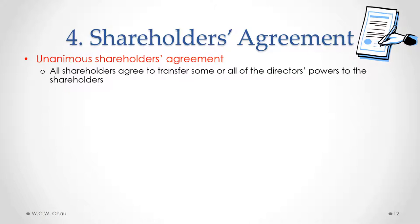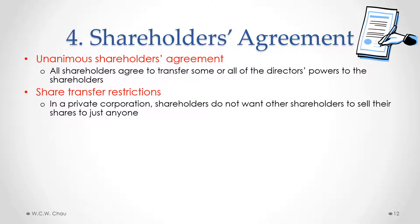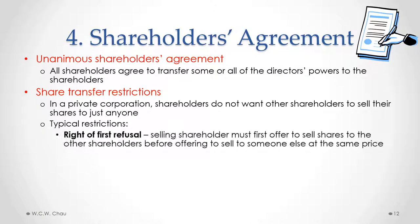In terms of share transfer restrictions, in a private corporation shareholders usually do not want other shareholders to sell their shares to just anyone. A typical restriction is a right of first refusal: if one shareholder wants to sell their shares and receives an offer from someone else, they must first offer those shares for sale to the other shareholders of the corporation at the same price that the outside person is willing to pay.